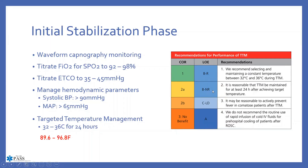Waveform capnography — we can do that, so put a check next to that. We can titrate FiO2 for an SpO2 of 92% to 98%. For us as EMTs and paramedics, we can do this — turn up or turn down your oxygen delivery device to maintain 92% to 98%. We want to titrate end-tidal CO2 to 35–45%, which we can do based on the number of breaths the patient is getting. We can also manage hemodynamic parameters with a systolic pressure greater than 90.